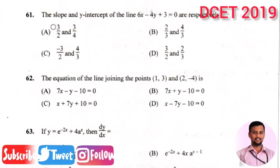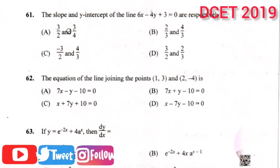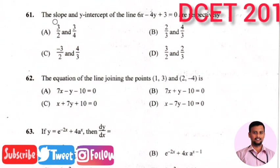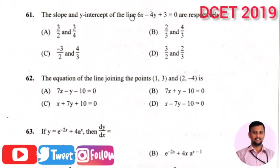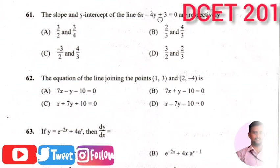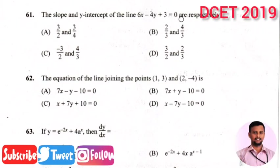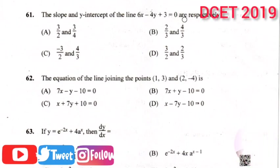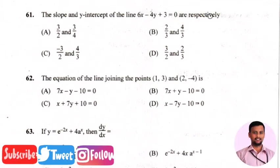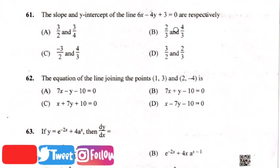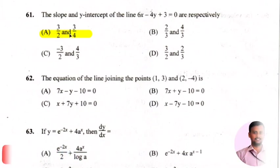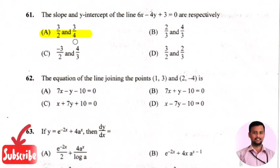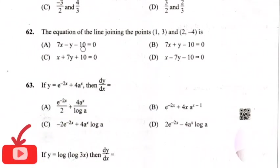The next question in the mathematics section: the slope and y-intercept of a line 6x minus 4y plus 3 equals 0 are respectively? The right answer is option 1, that is 3/2 and 3/4.